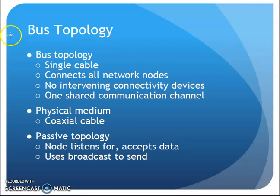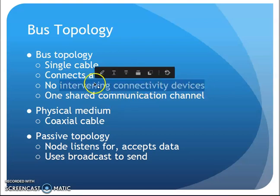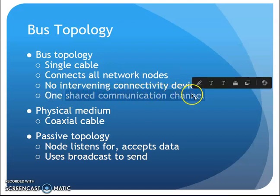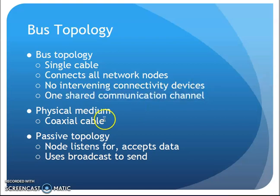Bus topology — this was the early, early days of Ethernet networking. You had a single cable that all the devices in the network connected to. There was really no intervening connectivity devices; it was basically one shared channel, one shared cable that everything was connected to, and in those days it was coaxial cable.